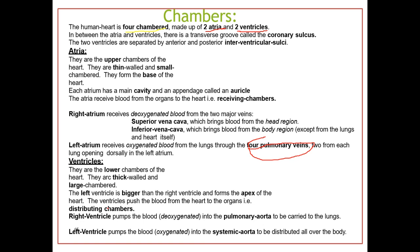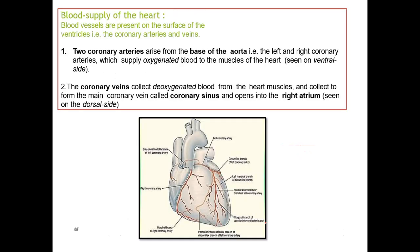The right ventricle pumps deoxygenated blood into the pulmonary aorta, which goes to the lungs for oxygenation. After oxygenation, blood returns through four pulmonary veins to the left atrium, then to the left ventricle, and this oxygenated blood is then distributed throughout the body.